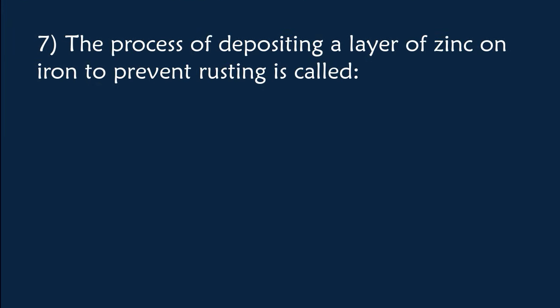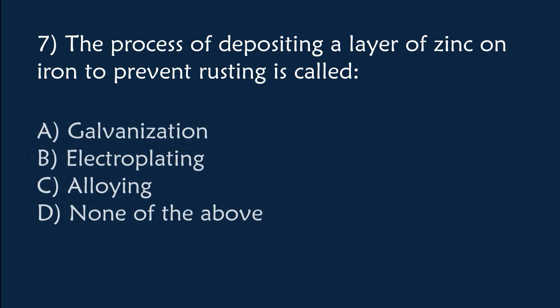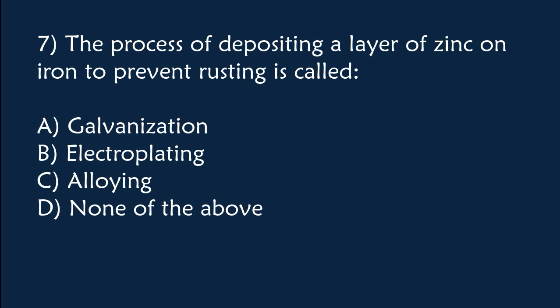The process of depositing a layer of zinc on iron to prevent rusting is called: A) Galvanization, B) Electroplating, C) Alloying, D) None of the above. The correct answer is Option A, Galvanization.